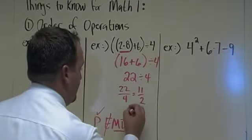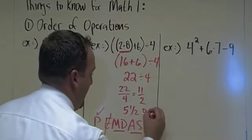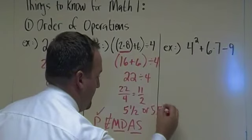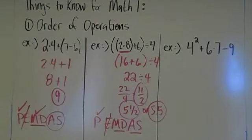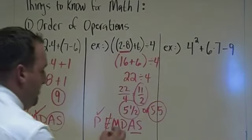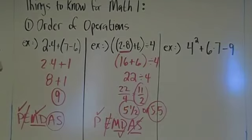I can also say that this is 5 and a half. Or I could say it's 5.5 if you do it on the calculator. Any one of those is correct for this problem. Of course, we did the division. There is no addition and subtraction in this problem. So we are finished.